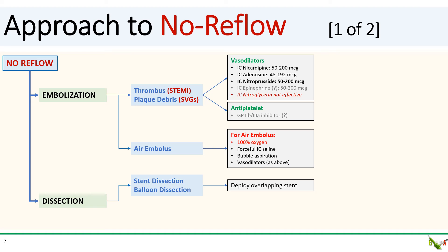The other major cause of no reflow is dissection. For stent and balloon dissections, the treatment is easy. You've already got a wire down, so just deploy an overlapping stent to cover the dissection. Make sure your stent ends in healthy tissue well beyond the end of the dissection.